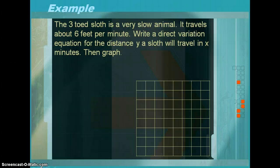The example says a three-toed sloth is a very slow animal. It travels about 6 feet per minute. Write a direct variation equation for the distance y a sloth will travel in x minutes, then graph.